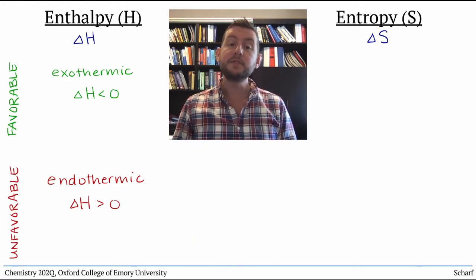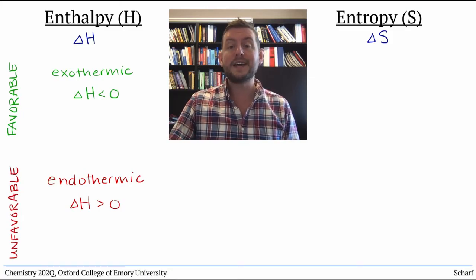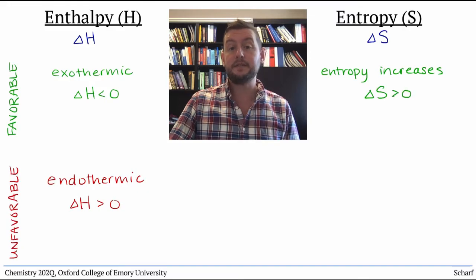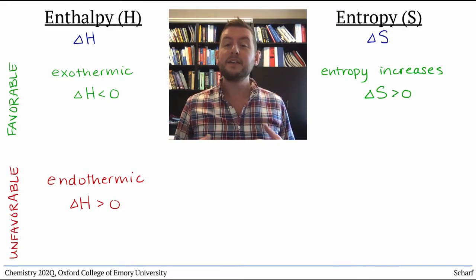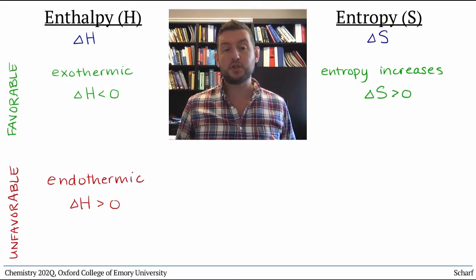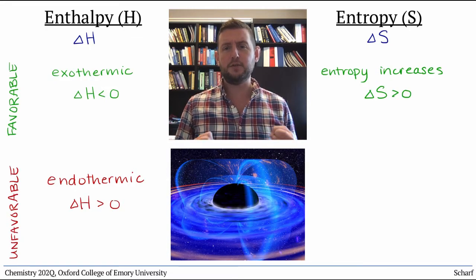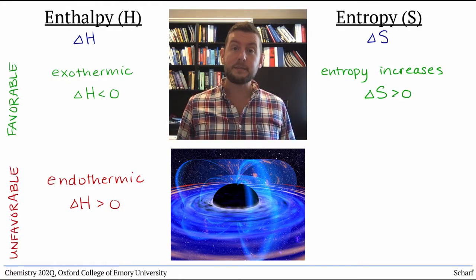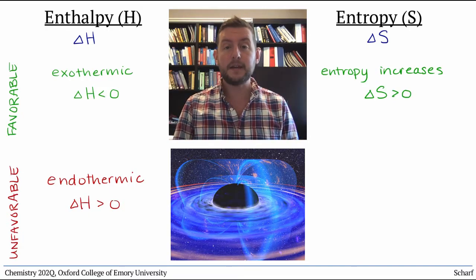In terms of entropy, processes tend to be most favorable when they cause an increase in entropy, when delta S is positive. As implied by the laws of thermodynamics, there is an inevitable march towards something called the heat death of the universe — you can google it — in which entropy is a maximum. So processes that increase entropy tend to be favorable.